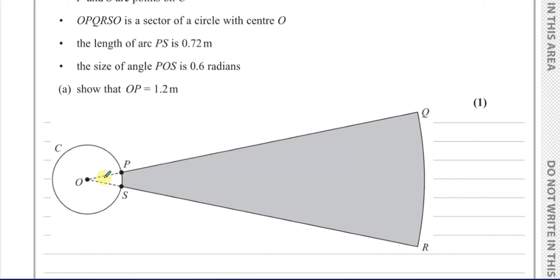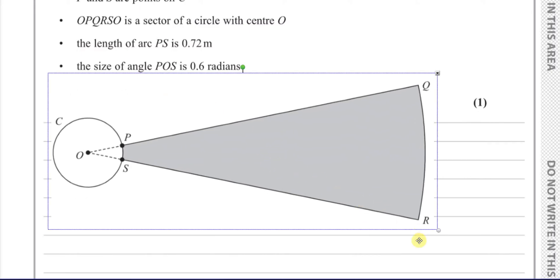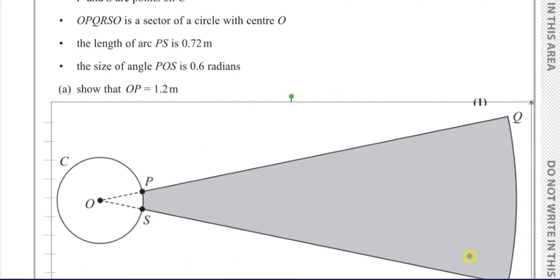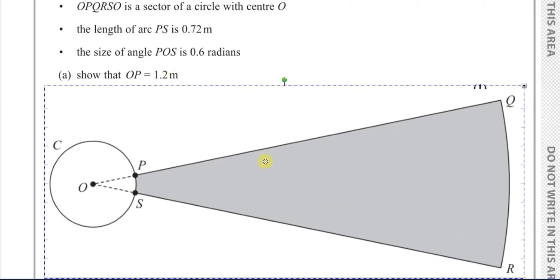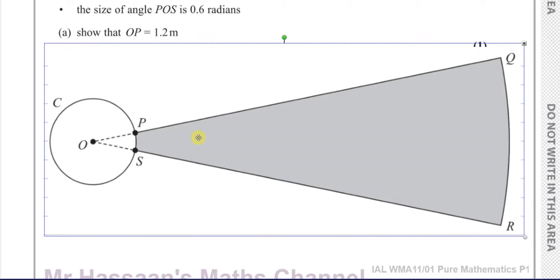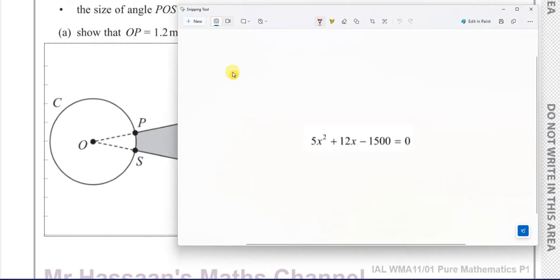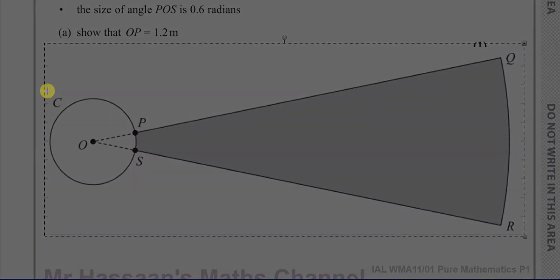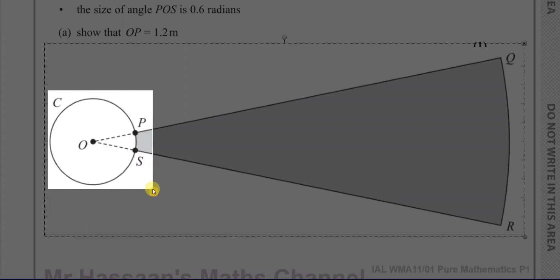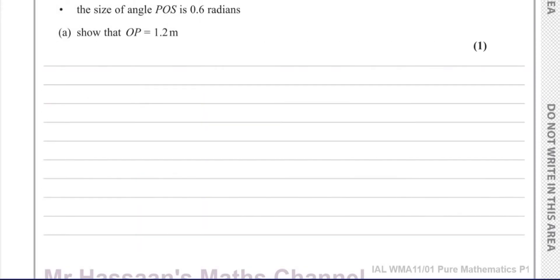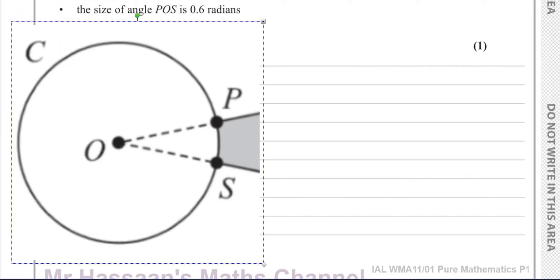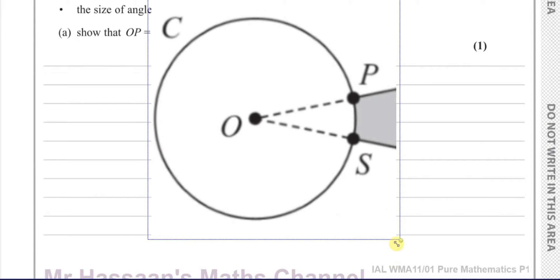The angle here is 0.6 radians. I don't have to consider most of this diagram for the first part, so I'll just take this section to make things a bit clearer.